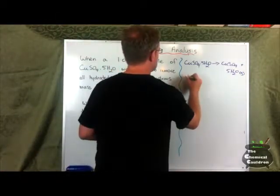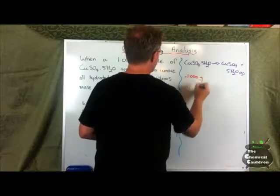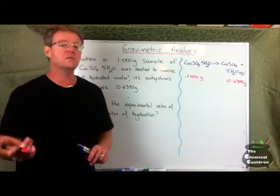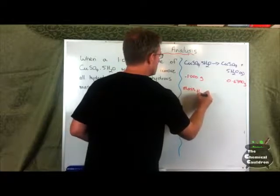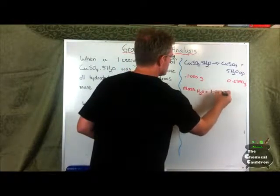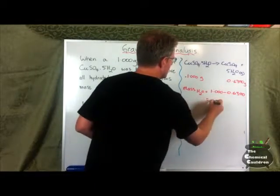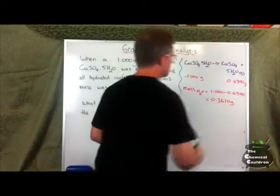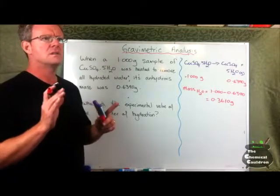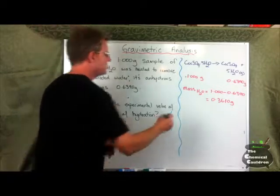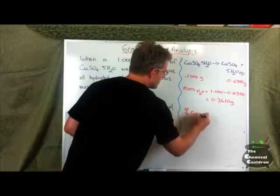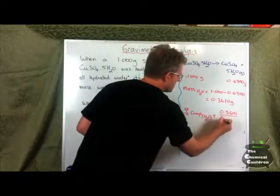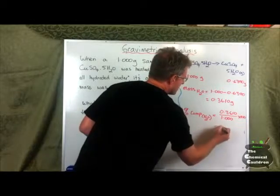Now, we started off with one gram over here, and we ended up with 0.6390 grams over there. So the mass difference between the two would be the mass of the water. So the mass of the water is equal to 1.000 take away 0.6390. That turns out to be 0.3610 grams. So that's the mass of the water that was contained within our sample. So to work out the percentage composition now of water, it's equal to 0.3610 divided by the 1. So the initial mass of the sample, in this case, was just 1 times 100. That turns out to be 36.10%.